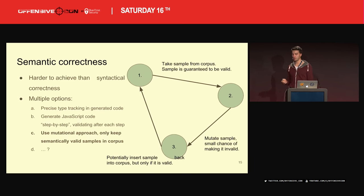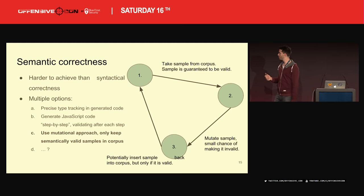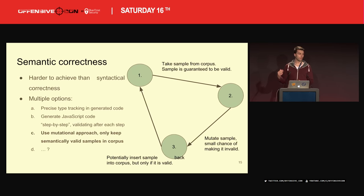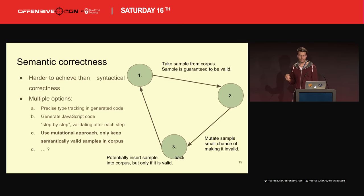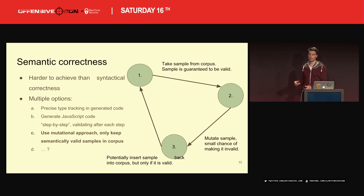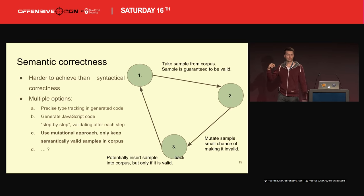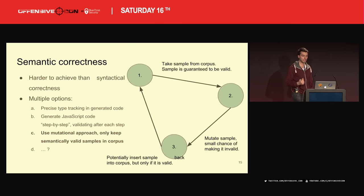The approach I decided to use is mutation-based. With a mutation-based approach, the idea is that your corpus always has semantically valid samples. You pick a sample — it's valid — do some small mutations to it, and these small mutations have a small chance of making it invalid. With that, you get a fairly high degree of semantic correctness. Depending on whether you do guided fuzzing, you put samples back into the corpus if they are interesting — but only if the sample doesn't throw an exception. Everything in your corpus must not throw runtime exceptions.